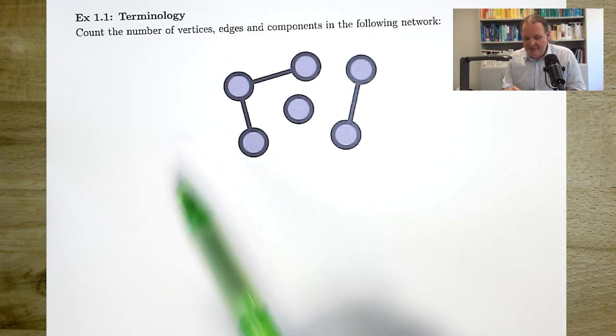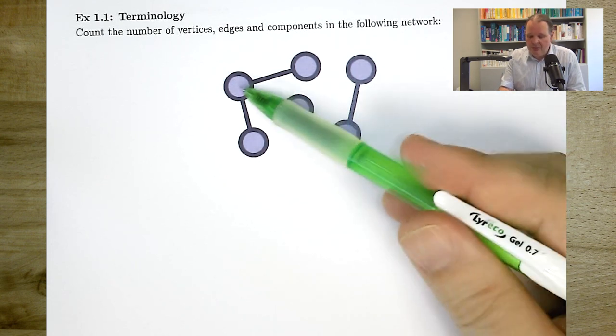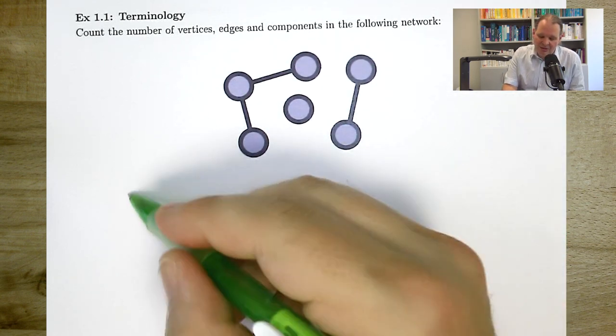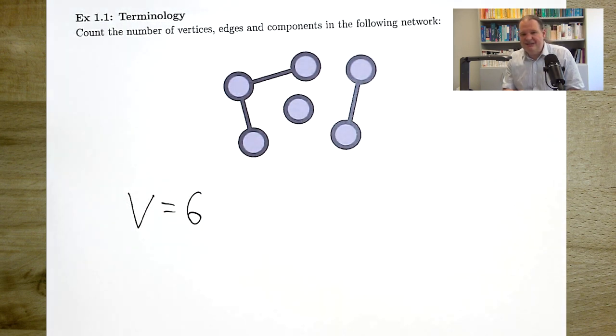We are asked to count the number of vertices. Vertices are the nodes of the network, so we count 1, 2, 3, 4, 5, 6. So we have 6 vertices here.